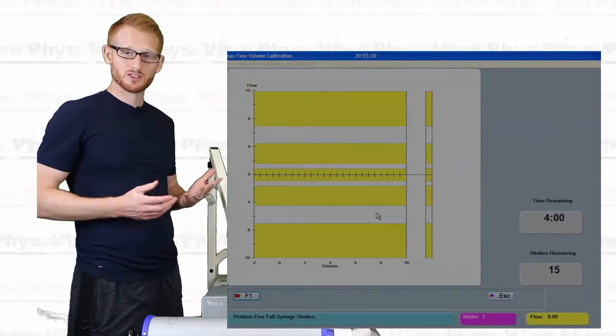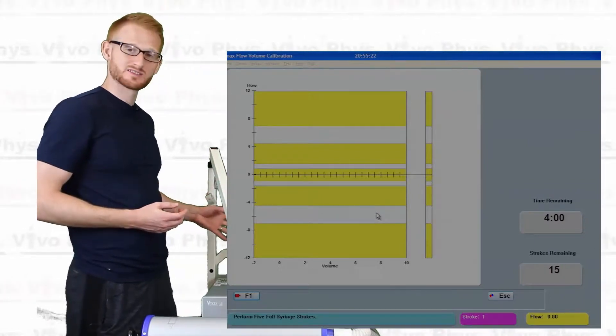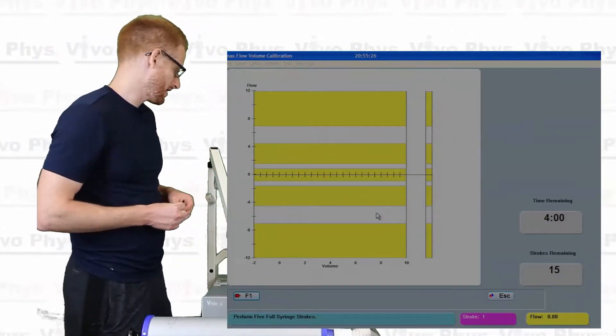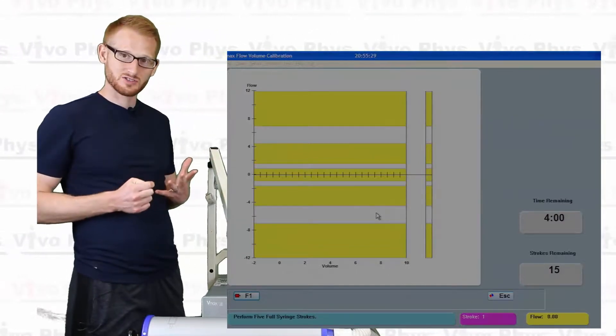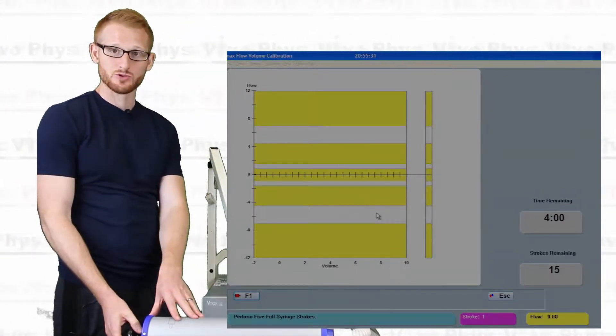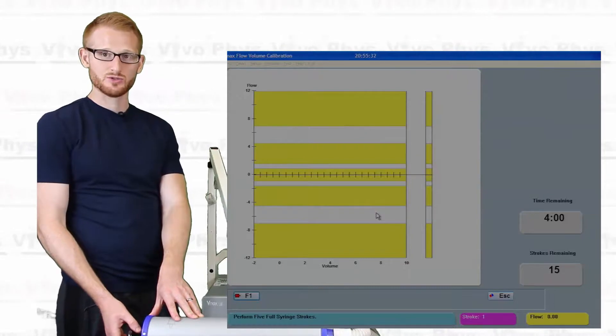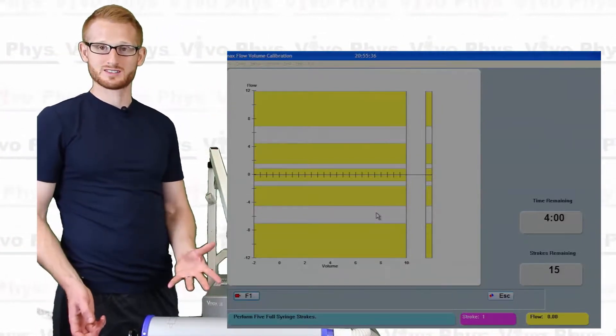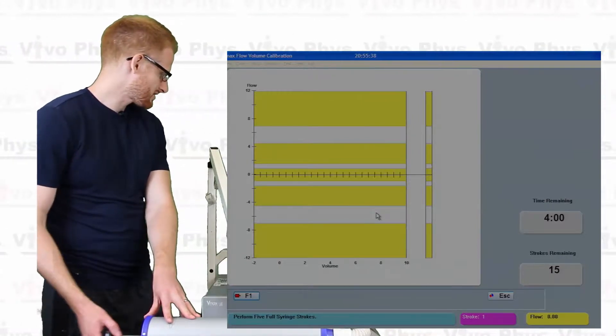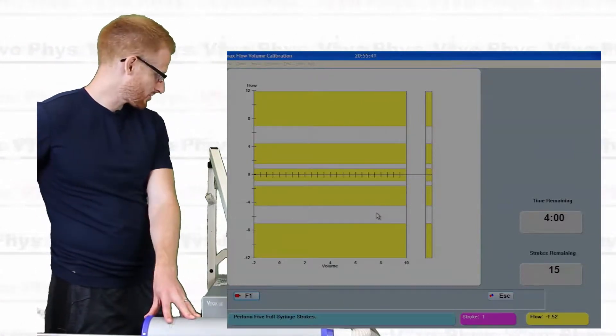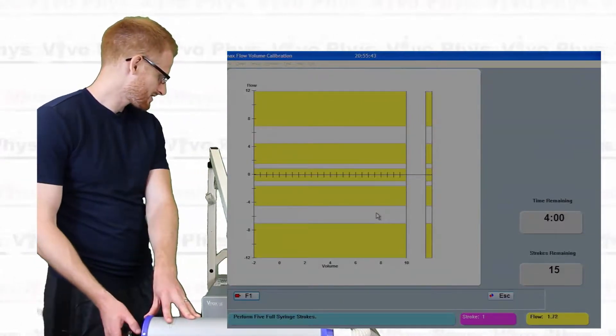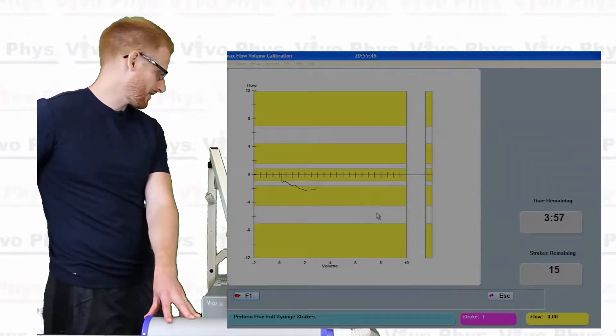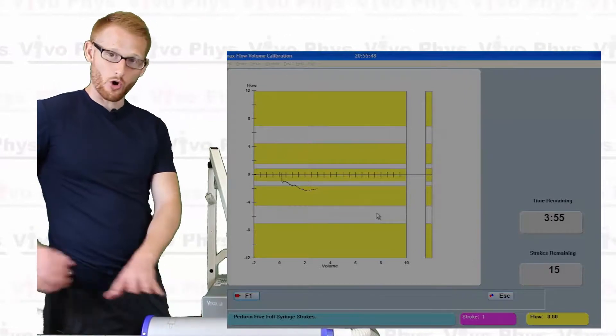Alright, so once it gets all the way across that little green bar, that is when the system has decided there has been zero flow for long enough that it has sort of a baseline for flow. Alright, so we're past that now. And we see this window with all these yellow bars. And what it really wants us to do now is we're going to start using this syringe to plunge air into the system at set rates. Alright, so you'll see once I start going here. So it takes a couple strokes for it to really see.